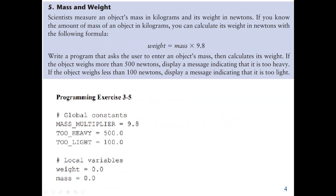Now let's look at the second question: Mass and Weight. Scientists measure an object's mass in kilograms and its weight in newtons. If you know the mass of an object in kilograms, you can calculate its weight in newtons with the formula: weight in newtons equals mass in kilograms times 9.8. We should write a program that asks the user to enter an object's mass, then calculate its weight. If the object weighs more than 500 newtons, we display a message indicating it's too heavy. If it weighs less than 100 newtons, we display that it's too light.